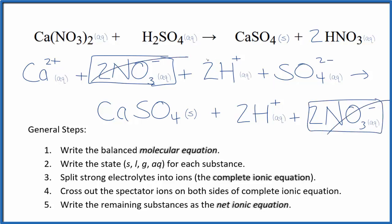We'll cross these out. Two hydrogen ions right here, again in the products. Cross that out. What's left, that's the net ionic equation for calcium nitrate plus sulfuric acid.